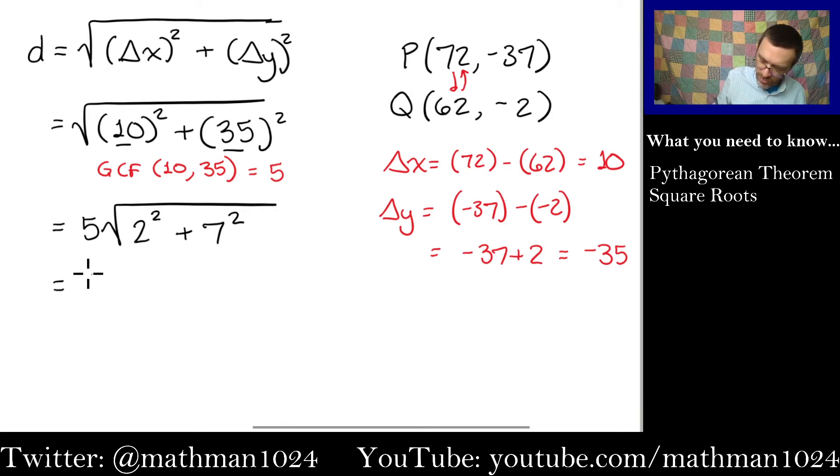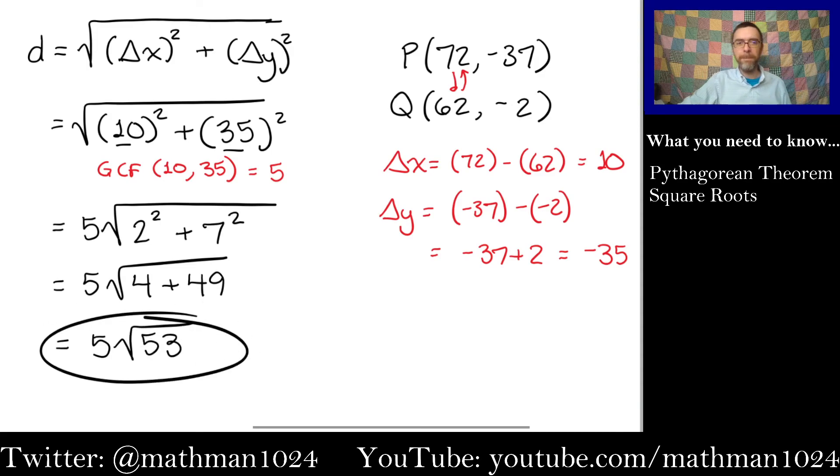And so now, we just finish this up, 2 squared is 4, 7 squared is 49, so the distance, when simplified, is 5 times the square root of 53. 53 is a prime number, so we're done.